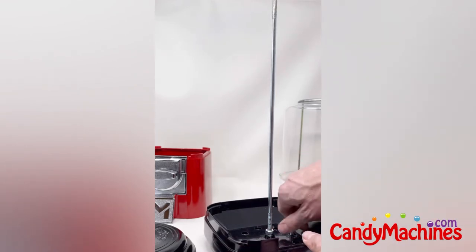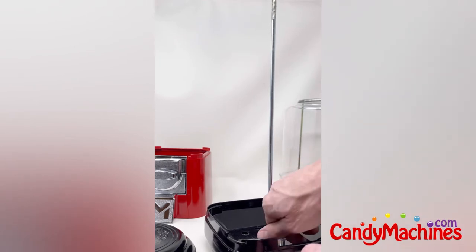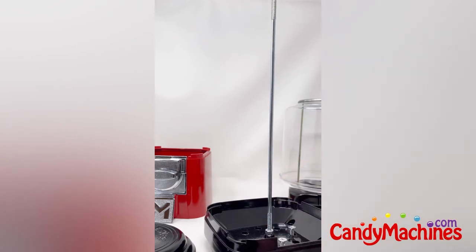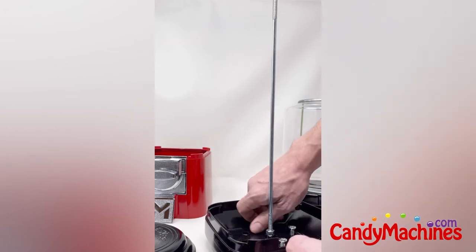To fill the machine, you simply need to pour small loose candy or nuts directly into the globe. You'll want to ensure your wheel is properly aligned. The two triangular slots shown inside the machine should be at roughly the 10 o'clock and 2 o'clock positions.